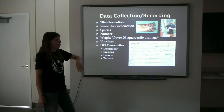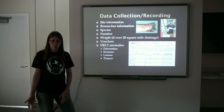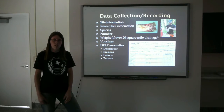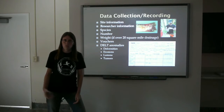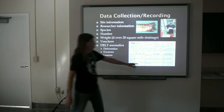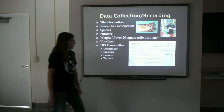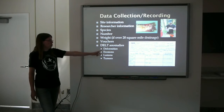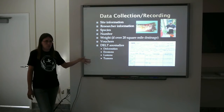DELT anomalies are anything unusual about the fish that may indicate something about the stream section. These would all be recorded on your data sheet. These include deformities, erosions, lesions, and tumors.